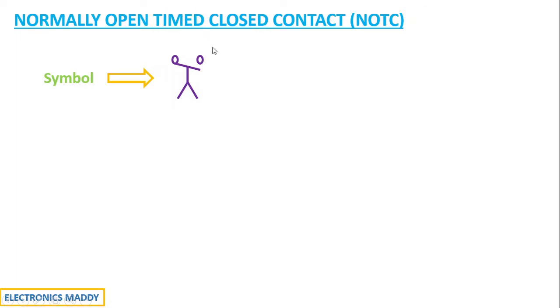Based on the time delay, it will close and act as a closed contact. It will be open initially, once it is energized there will be some time delay, and based on that time delay, it will close later on. That is why it is called a normally open timed closed contact.